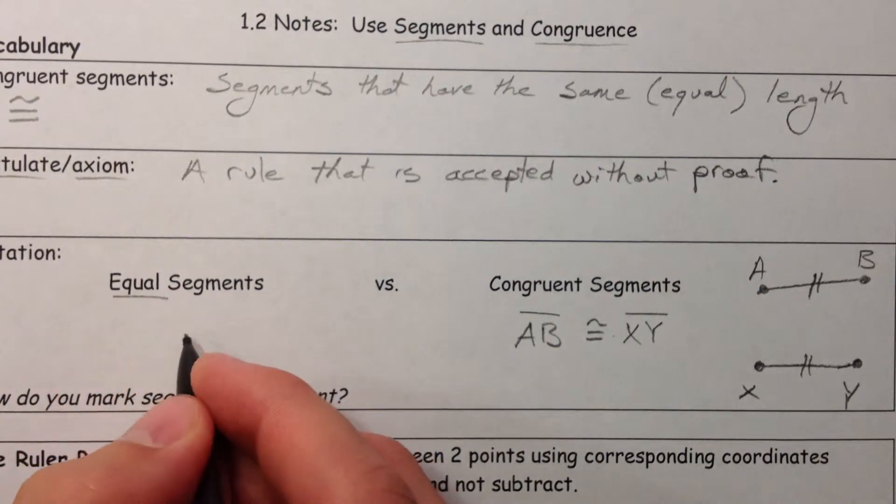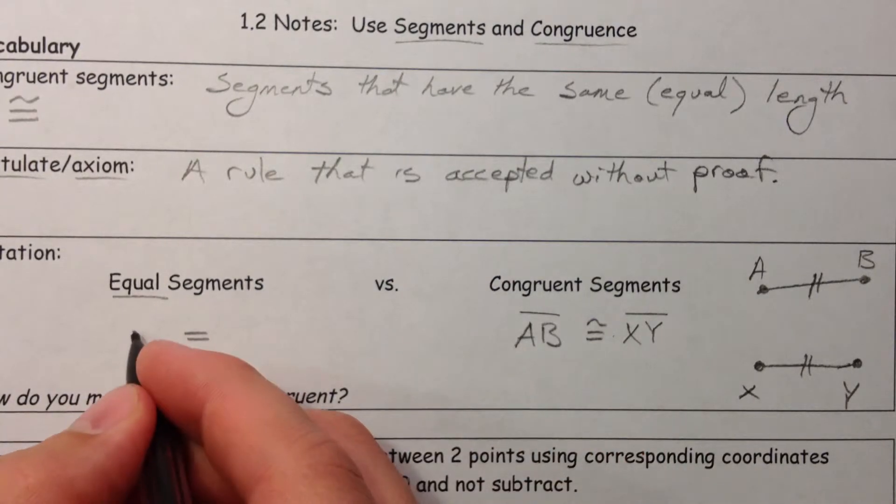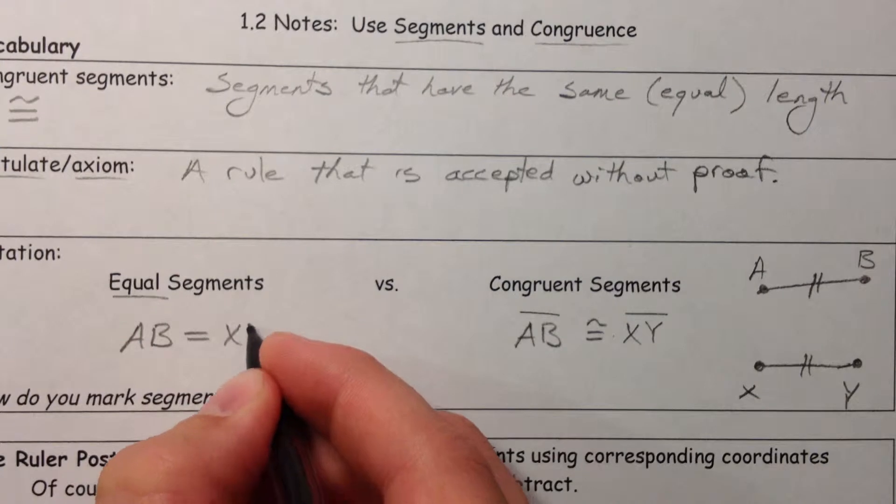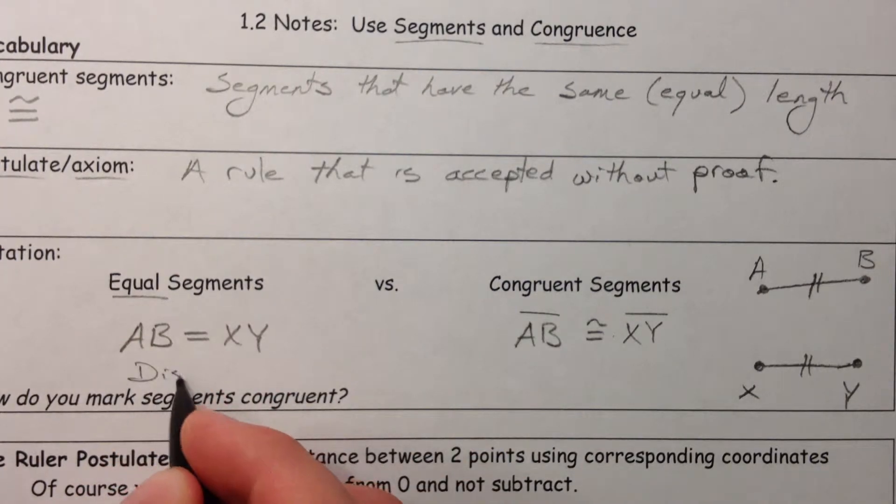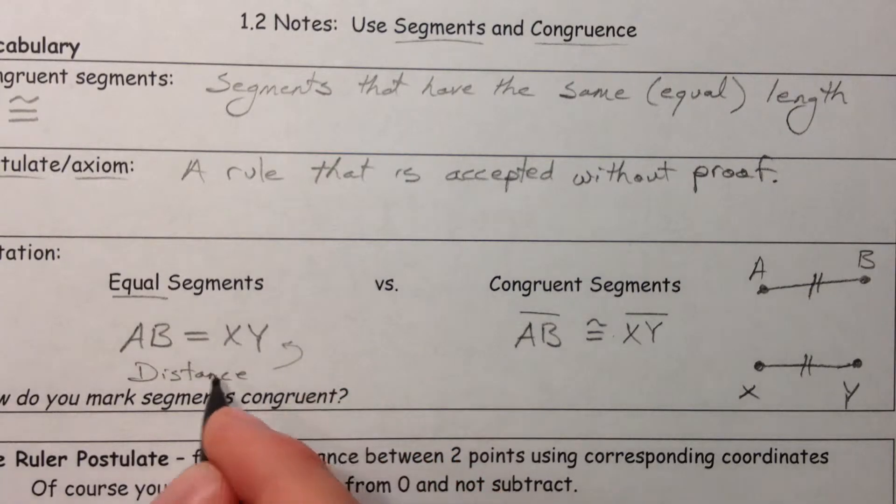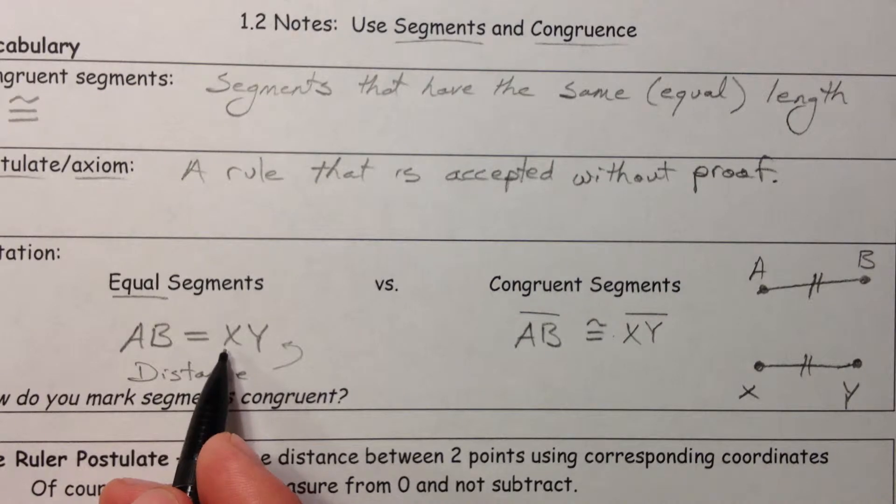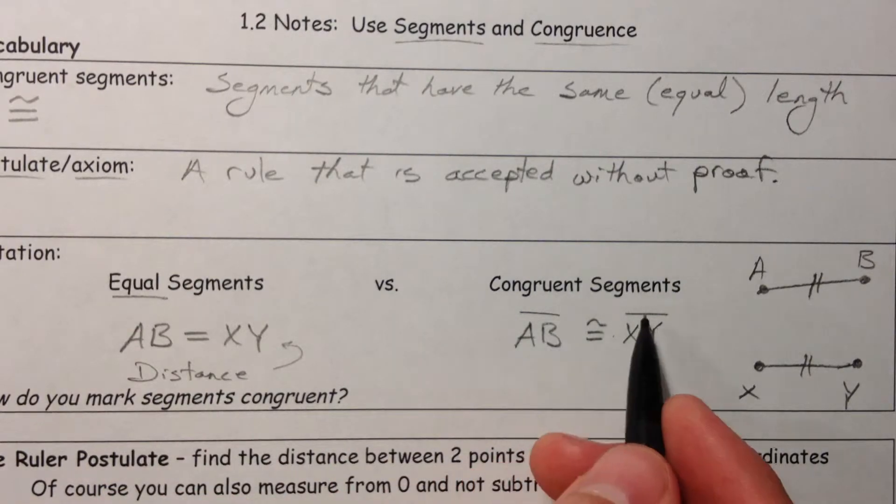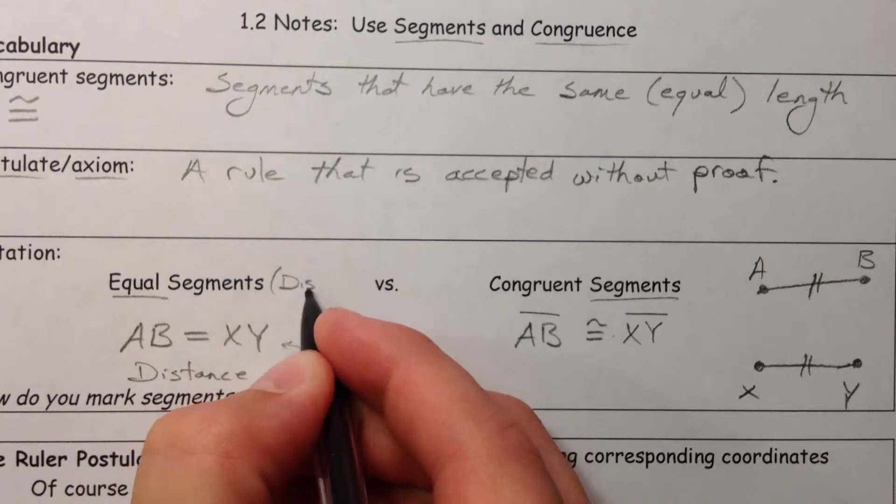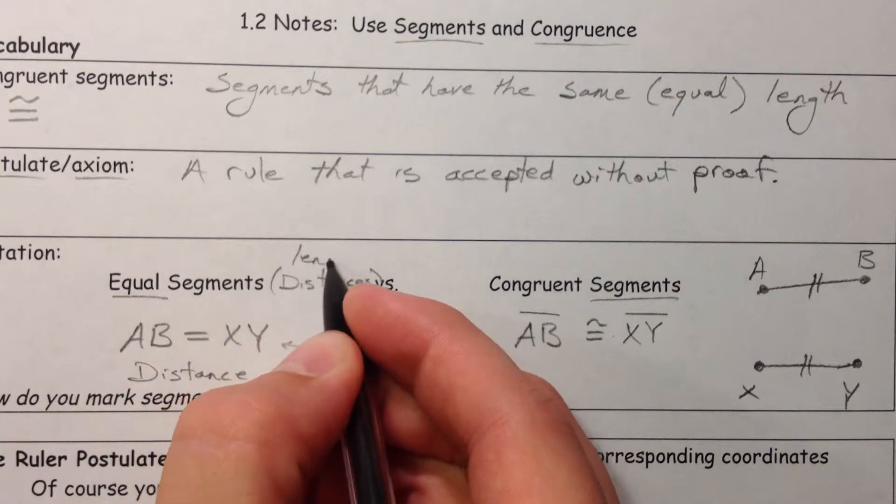But if we're talking about them being equal, if we want to use an equal sign, we're not going to talk about the segment, we're going to talk about the distance, AB and XY distance. So when you don't put the bar across the top, you're talking about the distance. When you do put the bar across the top, you're talking about the segment. Distances, or lengths if you prefer.